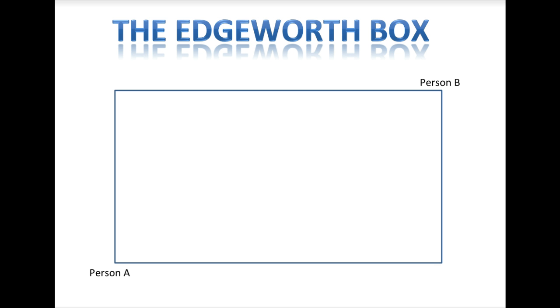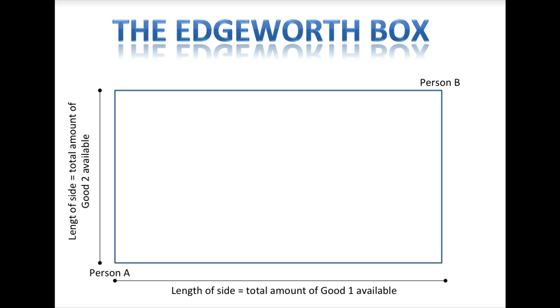The dimensions of the box tell you how much of each good is available for consumption. The length of the horizontal sides tells you how much of Good 1 is available, and the length of the vertical sides tells you how much of Good 2 is available. We will analyze these markets by figuring out how much of each good each person will buy or sell, and at what prices these transactions will take place.